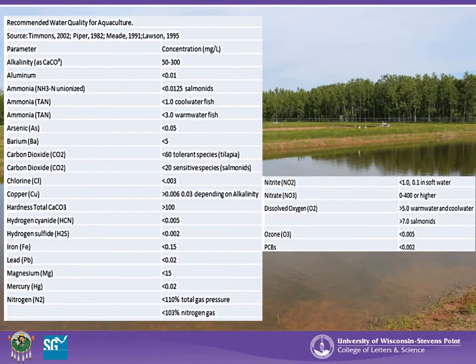This is a list of recommended water quality parameters for aquaculture taken from a variety of sources. It is suggested to have your source water tested periodically to make sure it is within these parameters for fish production. A copy of this table will be provided during the field training portion of this workshop.